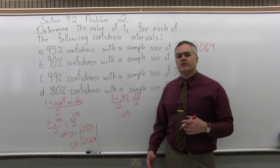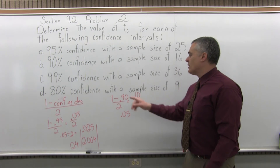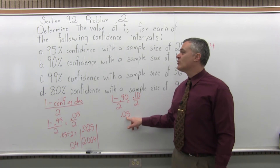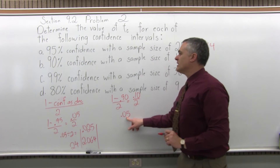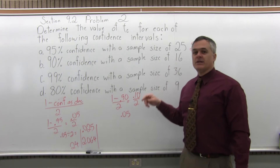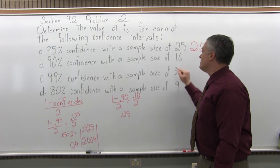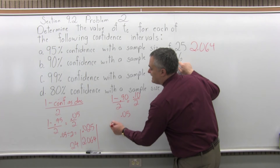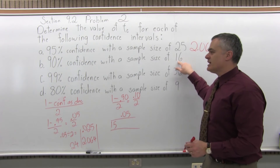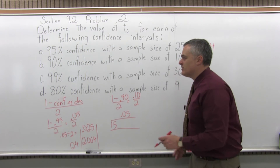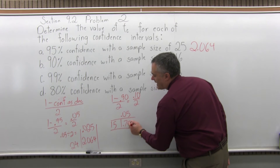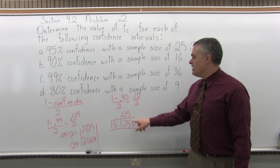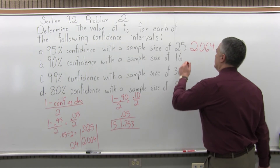You can do as much of this as you want on the calculator. I think of it as money — 1 minus 90 cents is 10 cents, half of 10 cents is 5 cents. So 0.05 is the correct column for a 90% confidence interval. The row is determined by the sample size; degrees of freedom should be 1 less than the sample size. A sample size of 16 gives us 15 degrees of freedom. Where 0.05 intersects with 15 is 1.753. So T sub C equals 1.753 for part B.